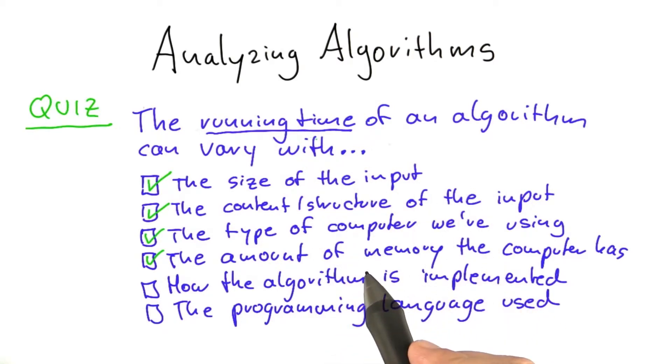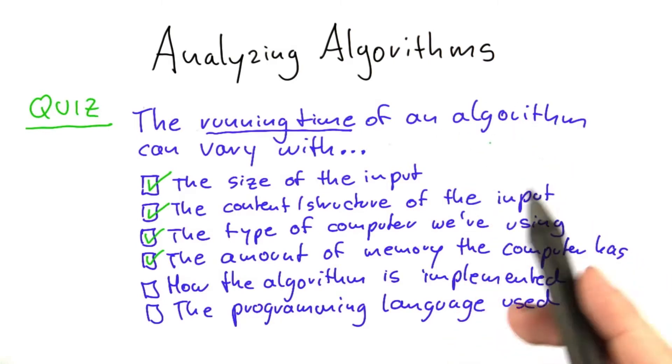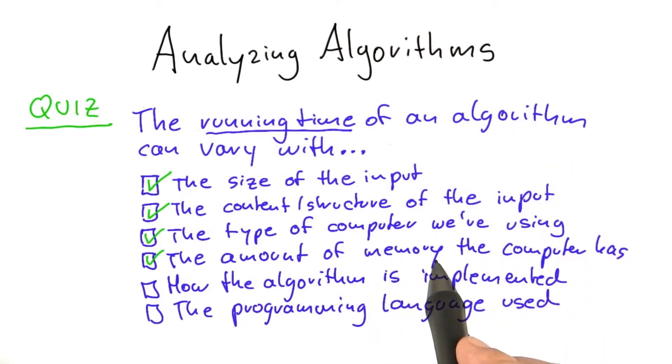But say the memory of your computer is not enough to keep all the data that the algorithm is using, and it has to use the hard disk, for example, to do some of the work, or the memory is not enough and the algorithm has to recalculate certain parts of the solution. So memory is also an important factor for running time.